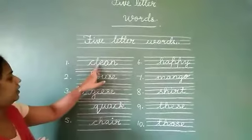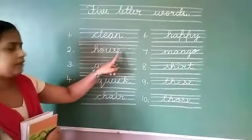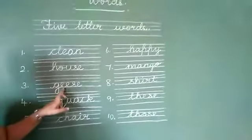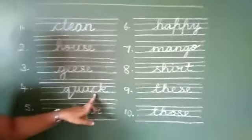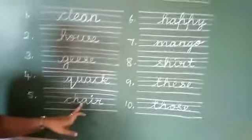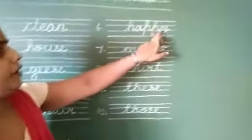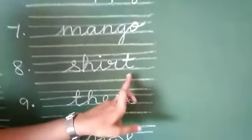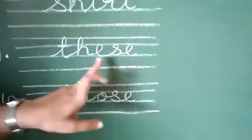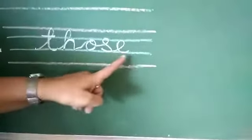So once again we will repeat. C-L-E-A-N: Clean. H-O-U-S-E: House. G-E-E-S-E: Geese. Q-U-A-C-K: Quack. C-H-A-I-R: Chair. H-A-P-P-Y: Happy. M-A-N-G-O: Mango. S-H-I-R-T: Shirt. T-H-E-S-E: These. T-H-O-S-E: Those.